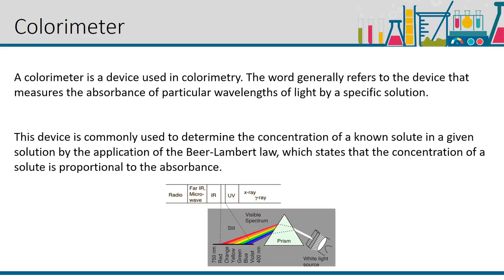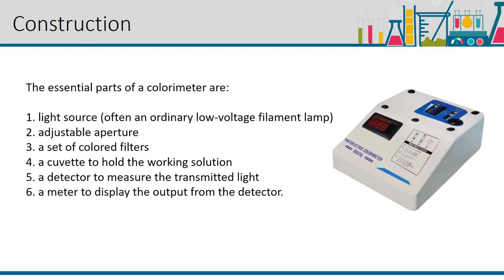The essential parts of a colorimeter are: 1. light source, often an ordinary low voltage filament lamp; 2. adjustable aperture; 3. a set of colored filters; 4. a cuvette to hold the working solution; 5. a detector to measure the transmitted light; 6. a meter to display the output from the detector.